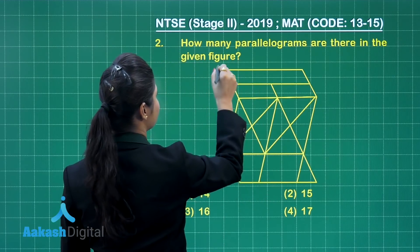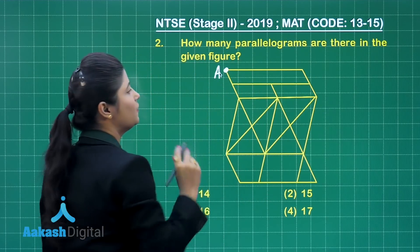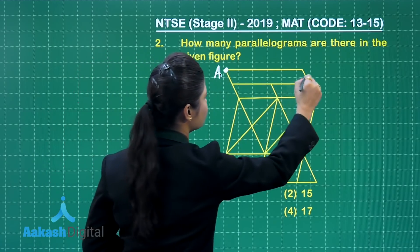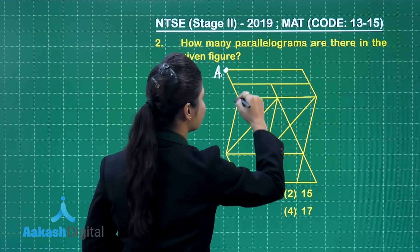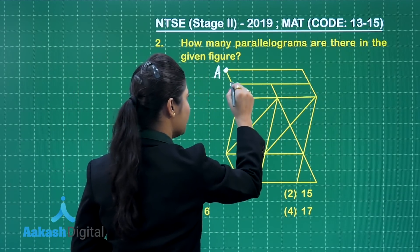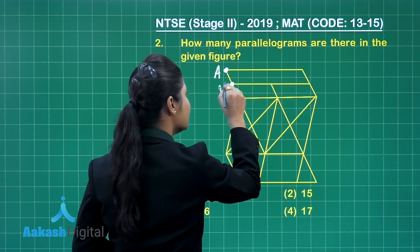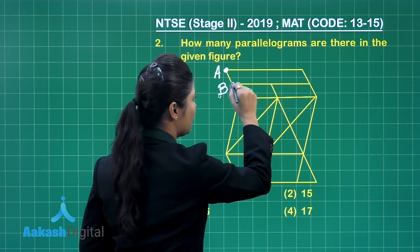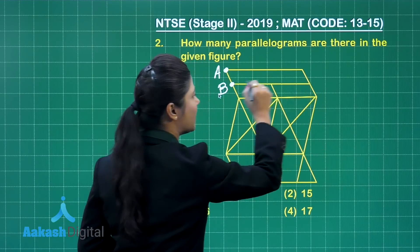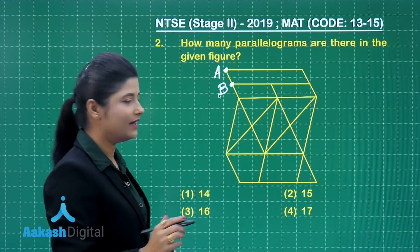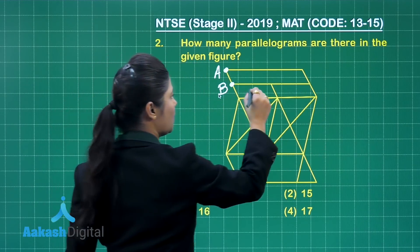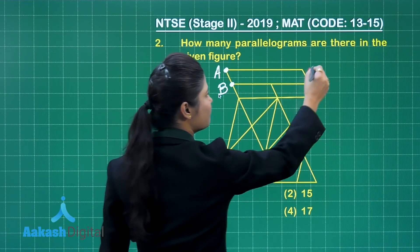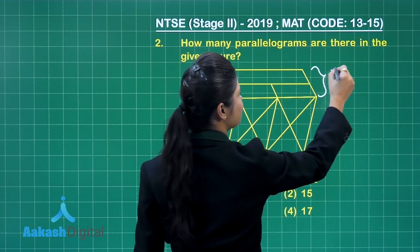If I consider point A for counting, you can see it is a vertex of a smaller parallelogram as well as a bigger parallelogram. Similarly, from point B, I have a smaller parallelogram and a bigger parallelogram. This gives a total of 5 parallelograms from this upper end.